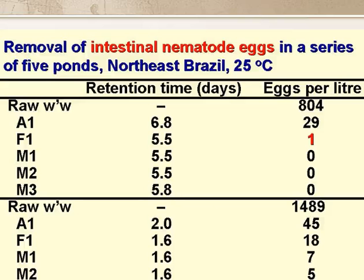We also monitored the removal of human intestinal nematode eggs — the eggs of Ascaris, Trichuris and the human hookworms. These are the geo-helminths, which comprise category C of the unitary environmental classification of water and excreta-related communicable diseases. Most of these eggs were removed in the anaerobic pond, with the remaining small numbers being gradually reduced in the subsequent ponds.